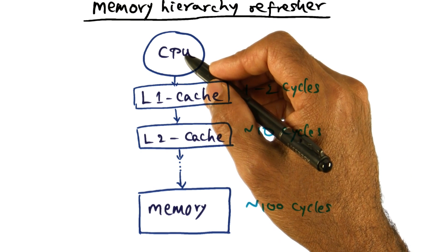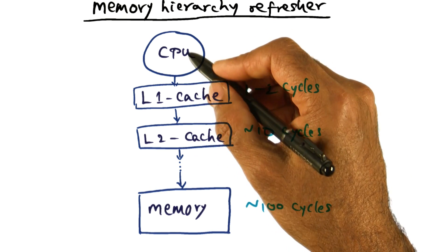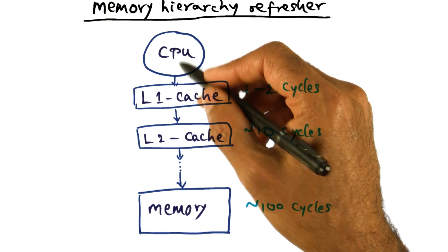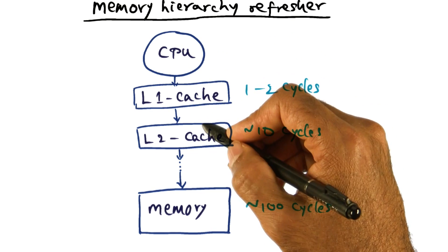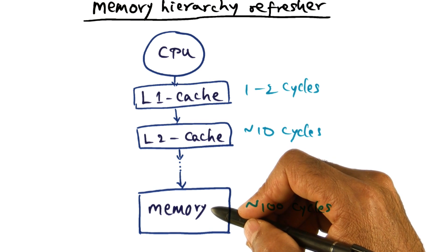So any hiccup that the CPU has in not finding data or instructions that it needs to execute the currently running thread in the caches, and it has to go all the way to the memory, is bad news in terms of performance.